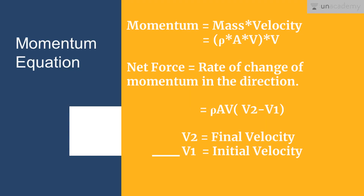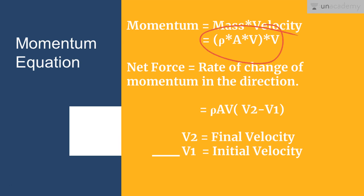First of all, let's understand what the momentum equation is. As the name suggests, momentum is equal to the product of mass into velocity. The rate of change of momentum will be equal to rho into A into V into V — this value represents the rate of change of momentum.